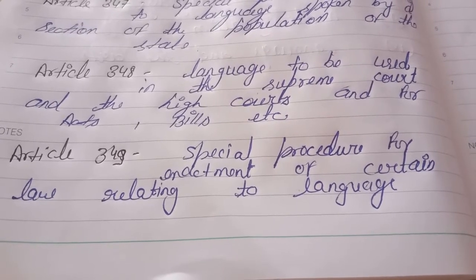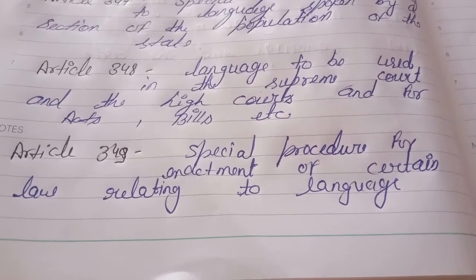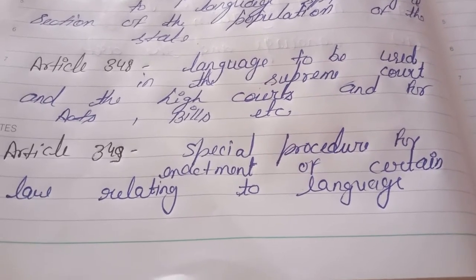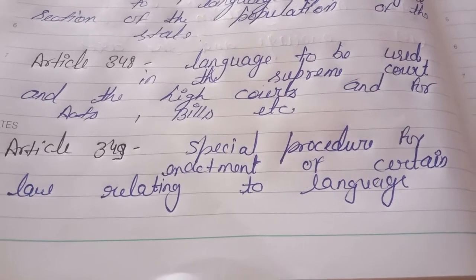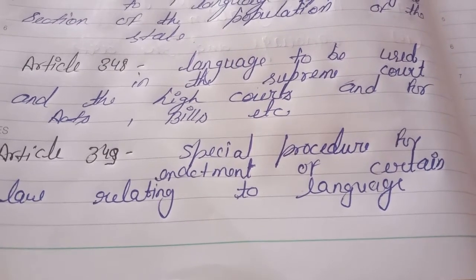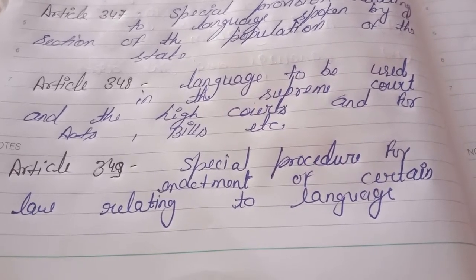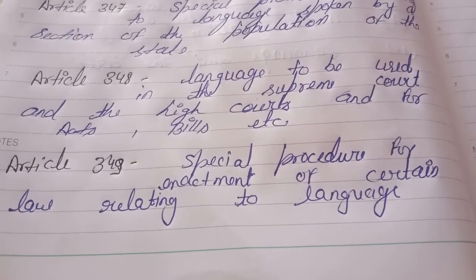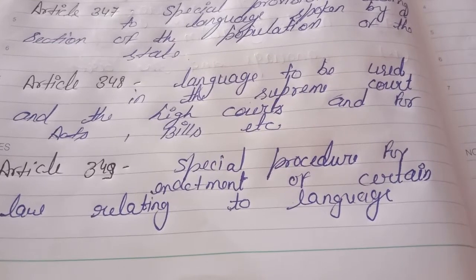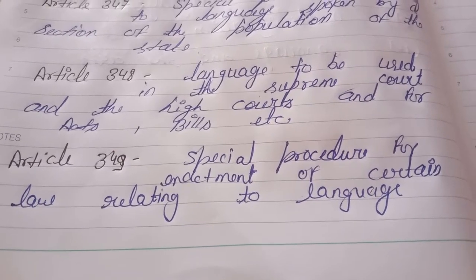Article 349: Special Procedure for Enactment of Certain Laws Relating to Language. During the period of 15 years from the commencement of the Constitution, no bill or amendment making provision for the language to be used for any of the purposes mentioned in clause 1 of Article 348 shall be introduced or moved in either House of Parliament without the previous sanction of the President. And the President shall not give his sanction to the introduction of any such bill or the moving of any such amendment except after he has taken into consideration the recommendations of the commission constituted under clause 1 of Article 344 and the report of the committee constituted under clause 4 of that article.